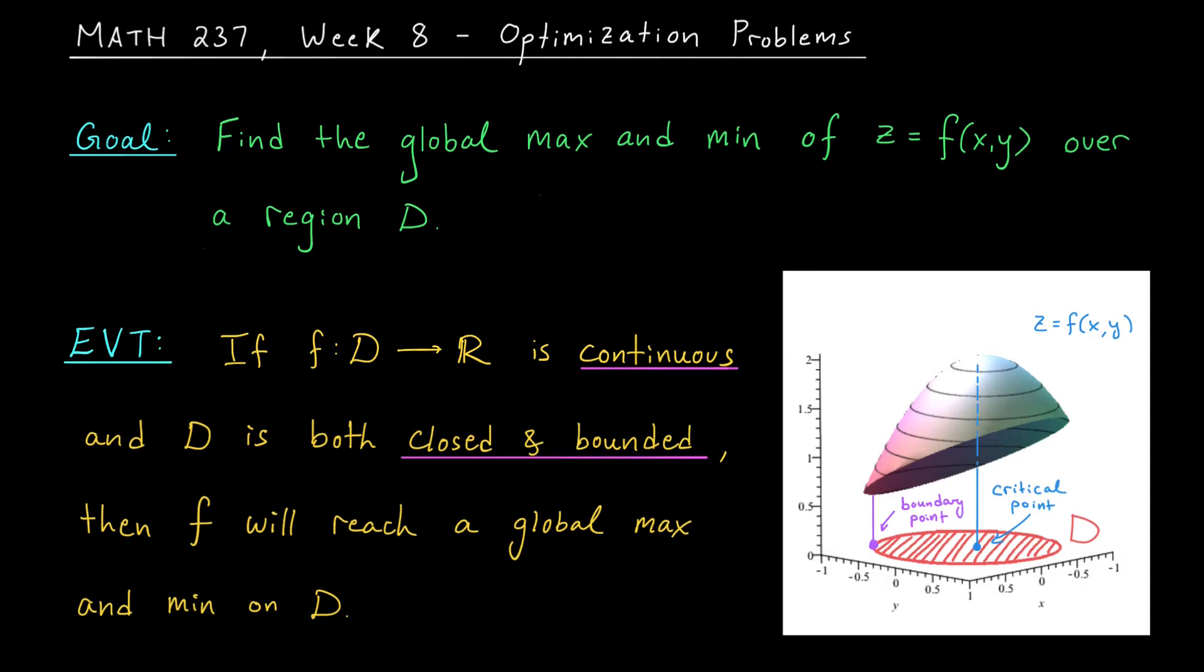If your boundary is particularly simple, like a straight line, for example, then you can restrict your function to the boundary pretty easily and reduce it to just a single variable function. Then you can use techniques from Math 137 to find its global max and min.